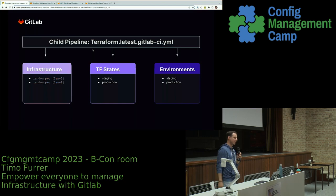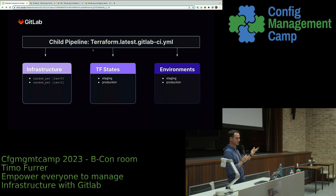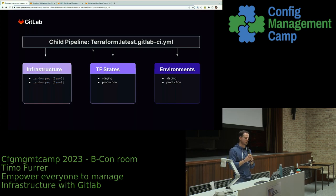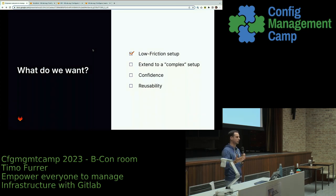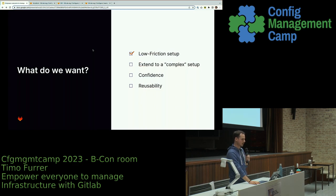So for staging we might have a pet name length of three and for production one of two. We have two pipelines running, two independent states, and two separate environments. With these tools you can extend the pipeline quite far to suit your own use case — giving you an extensible setup that can handle complex scenarios.